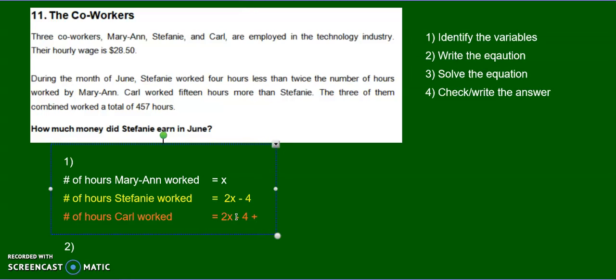Add 15. So when we simplify this, we get 2x plus 11. That's how much Carl worked.